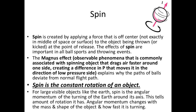The spin will change the path at the last point — we call this the Magnus effect. It is an observable phenomenon commonly associated with a spinning object that drags air faster around one side, creating a difference in pressure that moves it in the direction of the low pressure side. Where pressure is reduced, speed increases. This explains why the path of balls deviates from the normal flight path — that's why spin bowlers throw the ball with techniques that deceive the batsman.